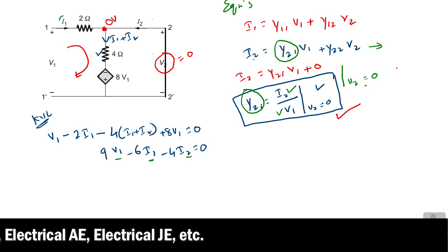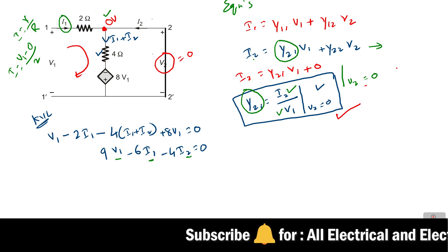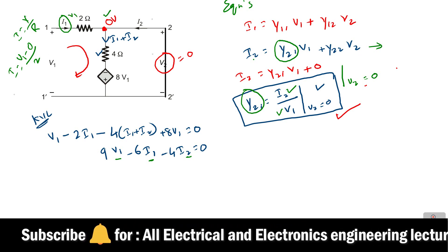For finding this current i1, we know that i equals v by r. So voltage across this 2 ohm resistor is v1 minus 0 divided by 2. So here this is 0 volts and here we can get v1, so v1 minus 0 by 2. Finally we will get i equals v1 by 2.